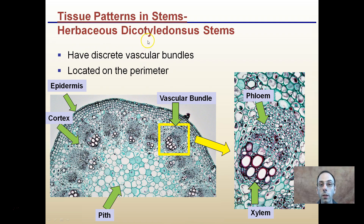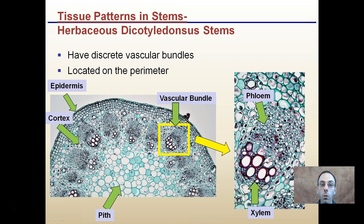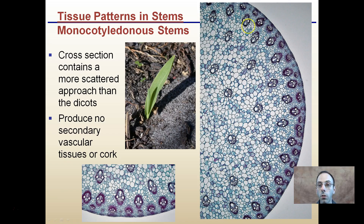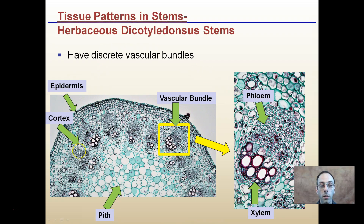Looking at herbaceous dicotyledon stems — herbaceous plants do not produce any form of wood structure. Herbaceous dicotyledon stems have discrete vascular bundles located mainly on the perimeter. You'll notice the pith in the middle, with all vascular bundles located at the perimeter. Comparing back to monocots, there is more concentration towards the perimeter but they are scattered on the interior within the pith as well. With herbaceous dicots, they are only at the perimeter of the stem.